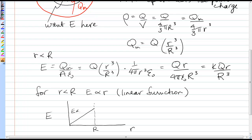The first part of the function would be linear, and then once you hit the edge, it acts like a point charge and drops off as 1 over r squared.